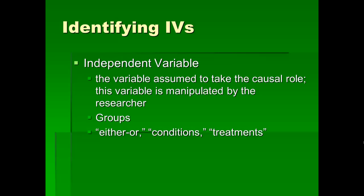In our experimental example, it's obvious that the thing taking the causal role is violent versus nonviolent cartoons — a violent cartoon will cause, or may cause, aggression in children. The researcher has control over who gets what video, so the videos are the independent variables. Another way to identify independent variables is to look for groups, conditions, or levels. Also look for the terms 'either/or': subjects were given either a violent cartoon or a nonviolent cartoon to watch. The terms 'conditions' or 'treatments' often pop up as well.